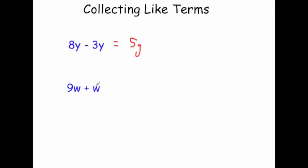Next: 9w plus w. This one's slightly different because you'll notice we've just got a w on its own. Well if you had 9w's and you add a w that would be 10w's. A w on its own is the same as 1w — remember 1 times w is the same as w, but in algebra you just write the w on its own. So 9w plus 1w would be 10w.